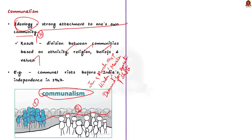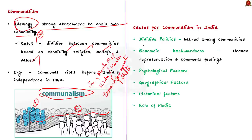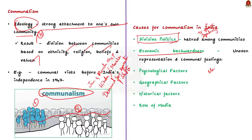So what are the causes for communalism in India? The first and foremost cause is divisive politics. Some political parties in India use religious and cultural differences to gain popularity. This divisive politics ultimately leads to hatred among different communities and ends up in communal violence. The second cause is economic backwardness. In India, the majority of minority communities have not been properly represented in public services, manufacturing, trade, and so on, due to their educational backwardness. This uneven representation aggravates communalism feelings.